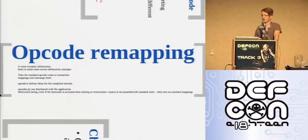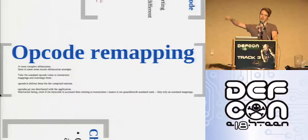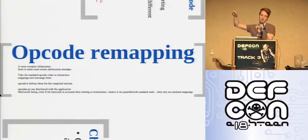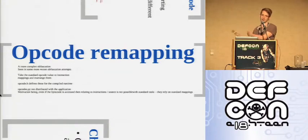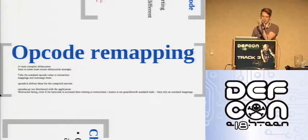Opcode remapping is one of the more complex things they do. That table of integers to instruction mappings gets juggled around so it's not the standard format. They change opcode.h in the runtime and remove opcode.py from the distributed runtime — meaning you can get the co_code objects but the byte stream makes no sense to any decompiler because they're running off the standard opcode map, while the code has a juggled opcode map.